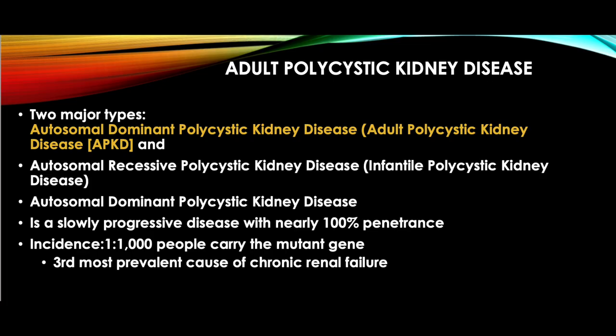There are two major types of adult polycystic kidney disease: autosomal dominant type and autosomal recessive type, also called infantile polycystic kidney disease.